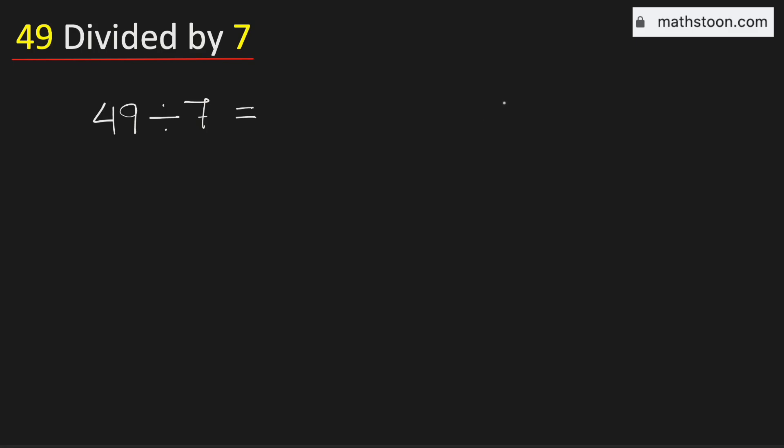In this video, let us find the value of 49 divided by 7 using the long division method. From the multiplication table of 7, we know that 7 times 7 is 49.